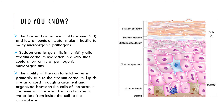The ability of the skin to hold water is primarily due to the stratum corneum. The lipids are arranged through a gradient and organized between the cells of this layer, which forms a barrier to water loss from inside the cell to the atmosphere.